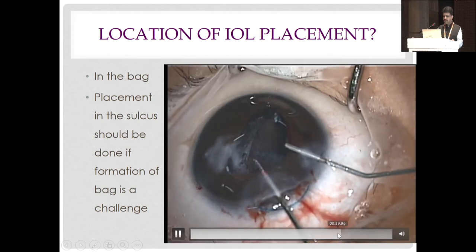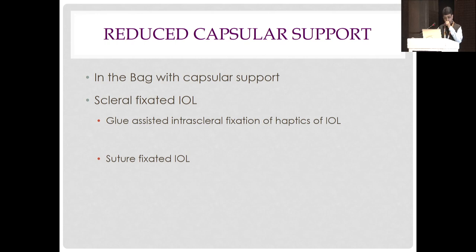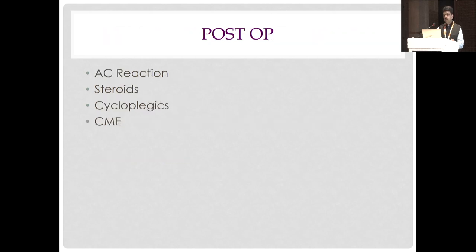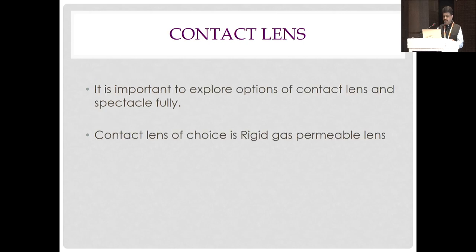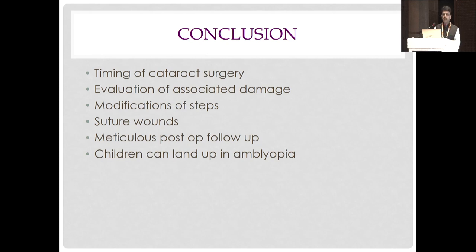Bimanual IA always provides better control and is preferable when visibility is low. For IOL timing: secondary implantation is better — improved IOL power calculation, fibrosed capsule holds IOL better, less post-op uveitis. If in bag placement is not possible, sulcus implantation or SFIOL are options. Summary: timing of cataract surgery is critical; primary globe integrity is the most important; pre-op evaluation and step modification are essential; suture all wounds; ensure close post-op follow-up especially in children to avoid amblyopia.